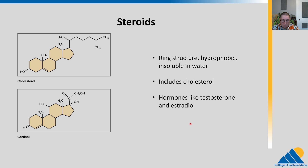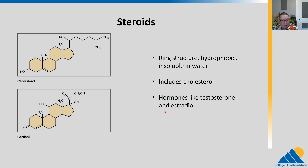Cholesterol is also a signaling molecule as well as a structural component of the cell membrane. Here's cortisol, which is a hormone that causes different reactions in the body, and it has that ring-like structure as well. You will talk about hormones a lot more if you take a human development class or anatomy and physiology. Plants have hormones too, but most plant hormones aren't actually steroids — they're very chemically different from the hormones in humans. So if you ate plant hormones, they wouldn't do anything to you because you don't have the receptors for them.